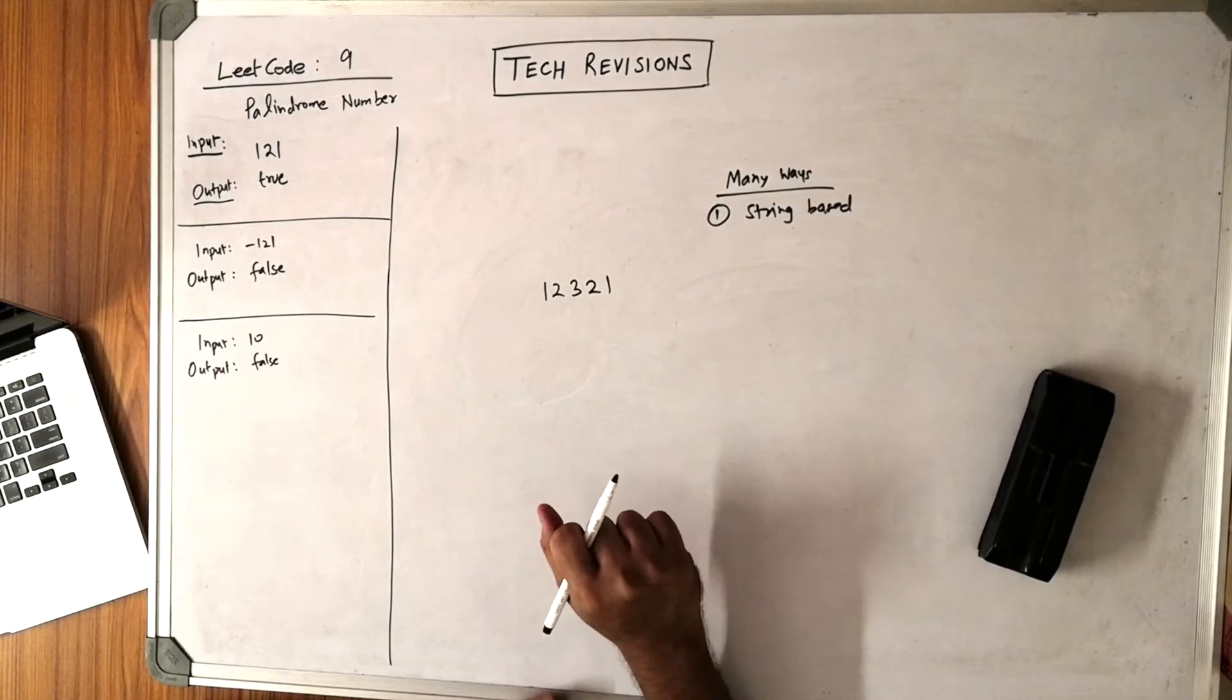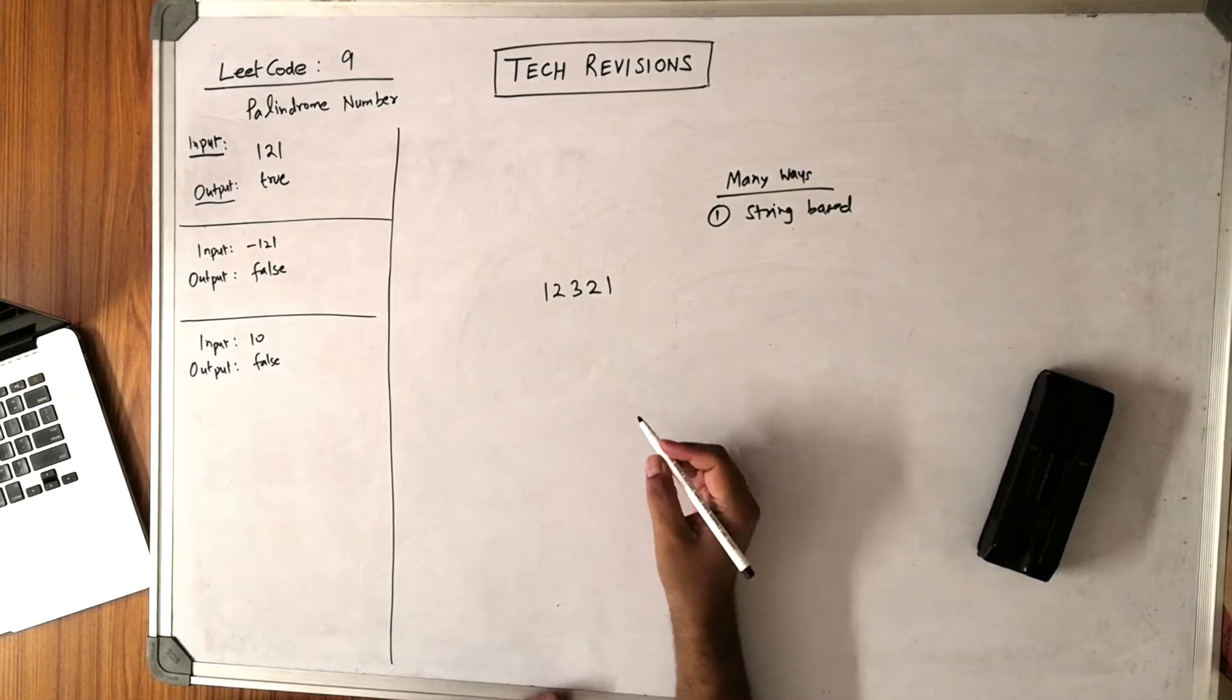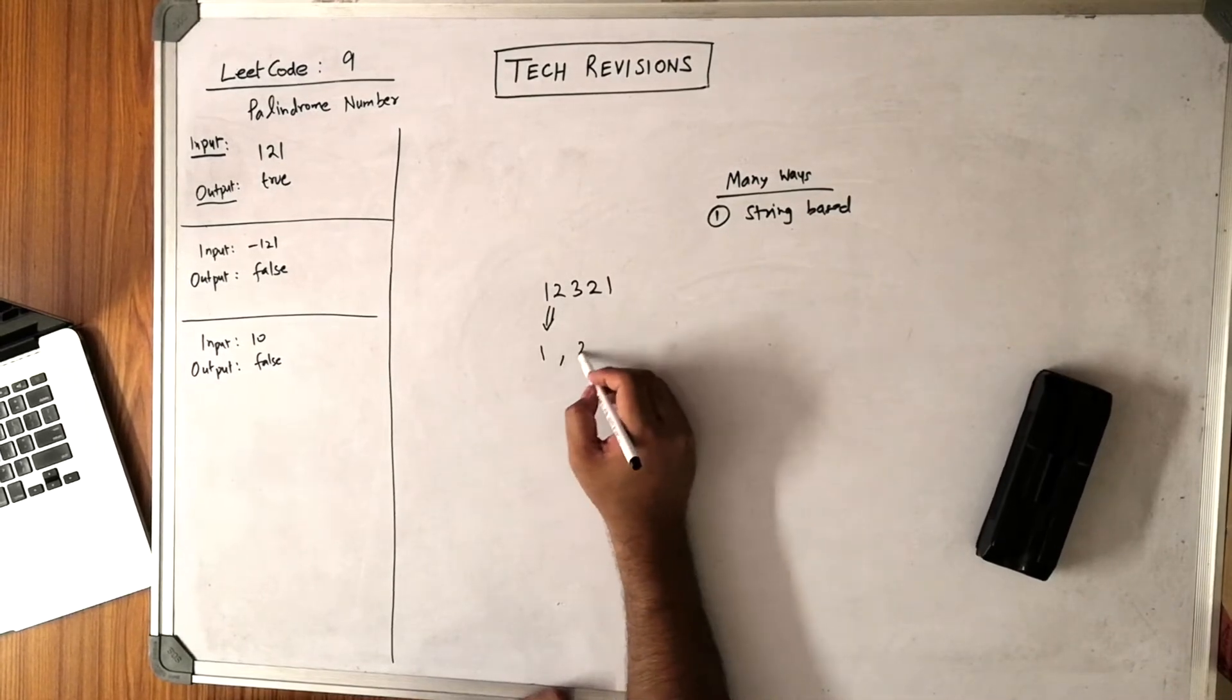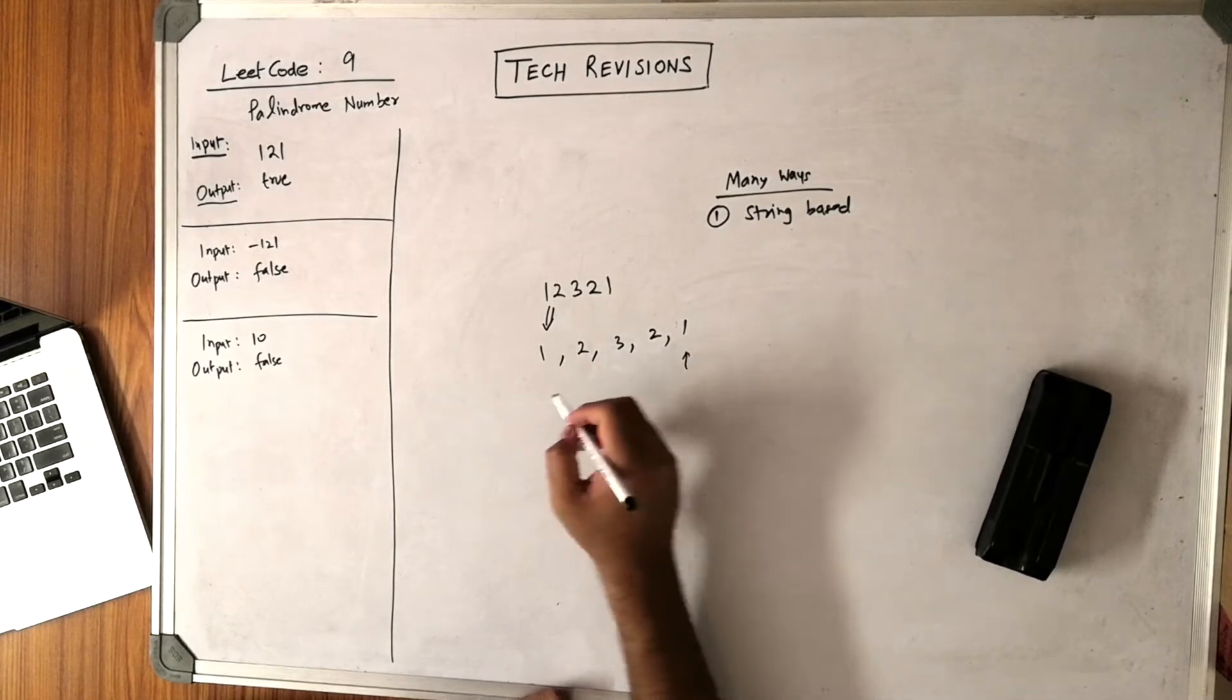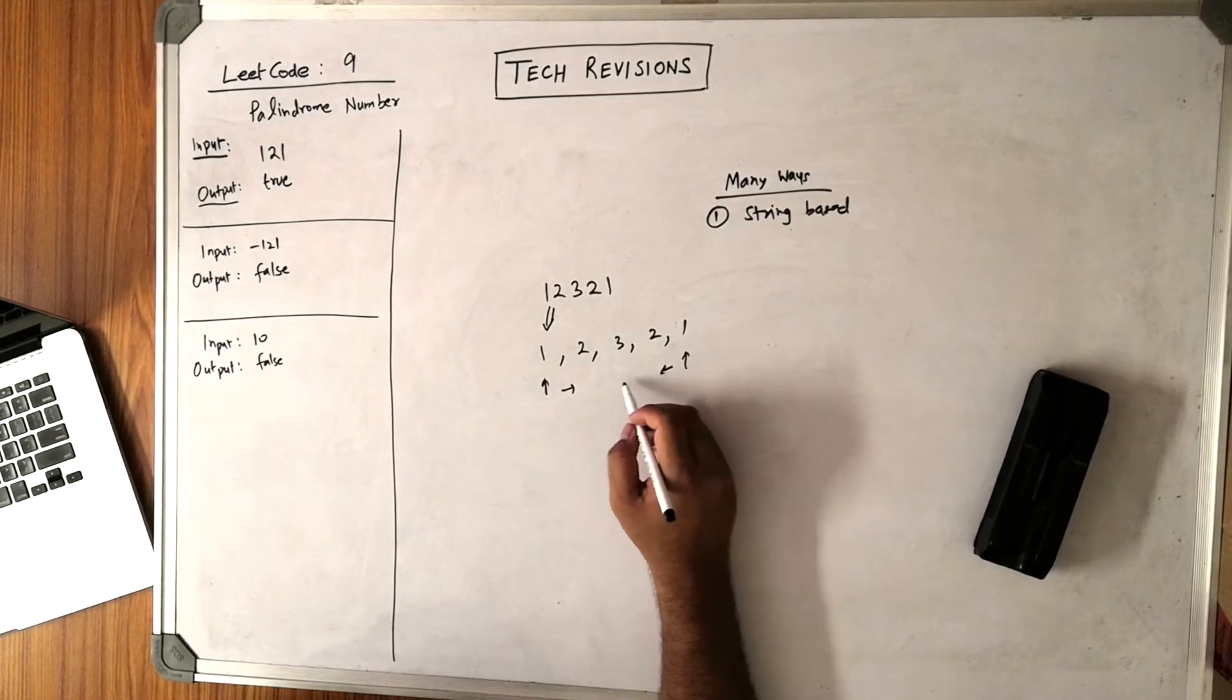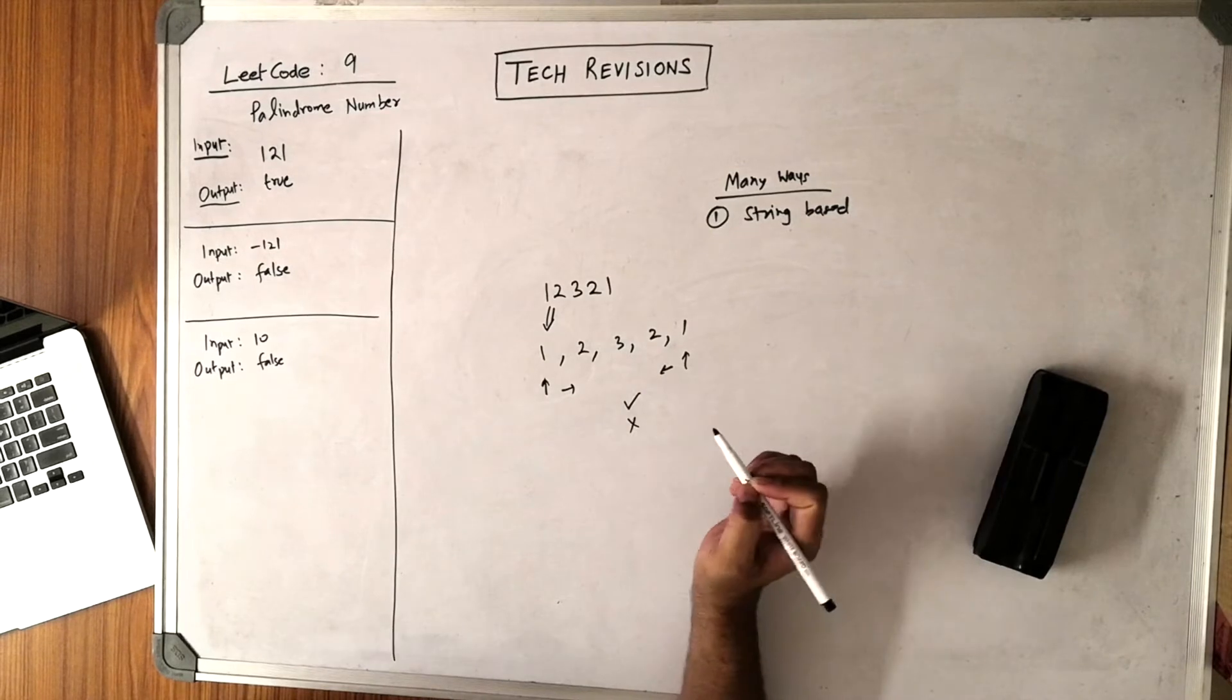One way you can solve this problem is to somehow break it into individual elements 1, 2, 3, 2, 1, and then put a pointer here and a pointer here and start comparing. Once you compared up till here and everything matches, then it is a palindrome, otherwise it is not a palindrome.